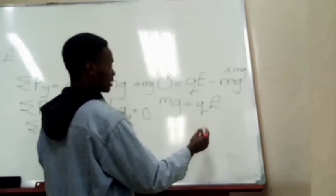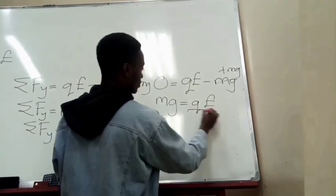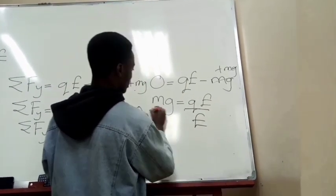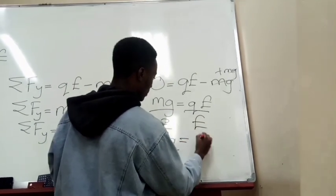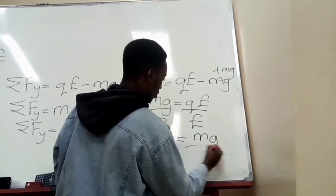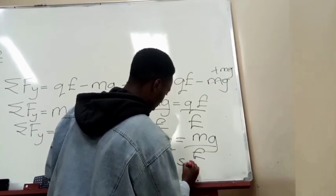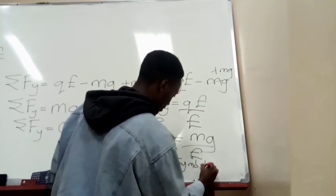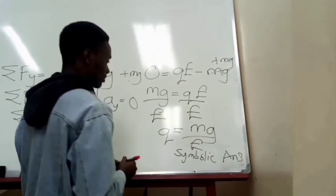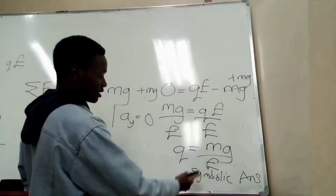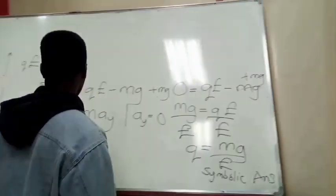So now, what we do here to find q, we must make q the subject of the formula. Thus, we divide the electric field on both sides. And then we are having q being equal to mg over the electric field. And then this is our symbolic answer. At this point, the problem has even been solved. All we have to do now is plug in the values which we already have.